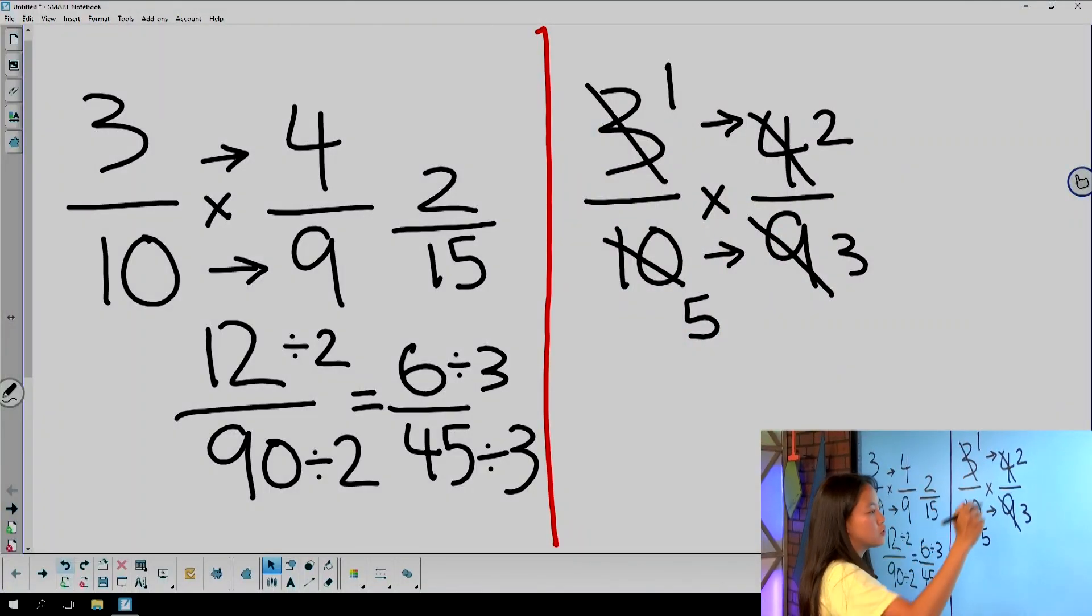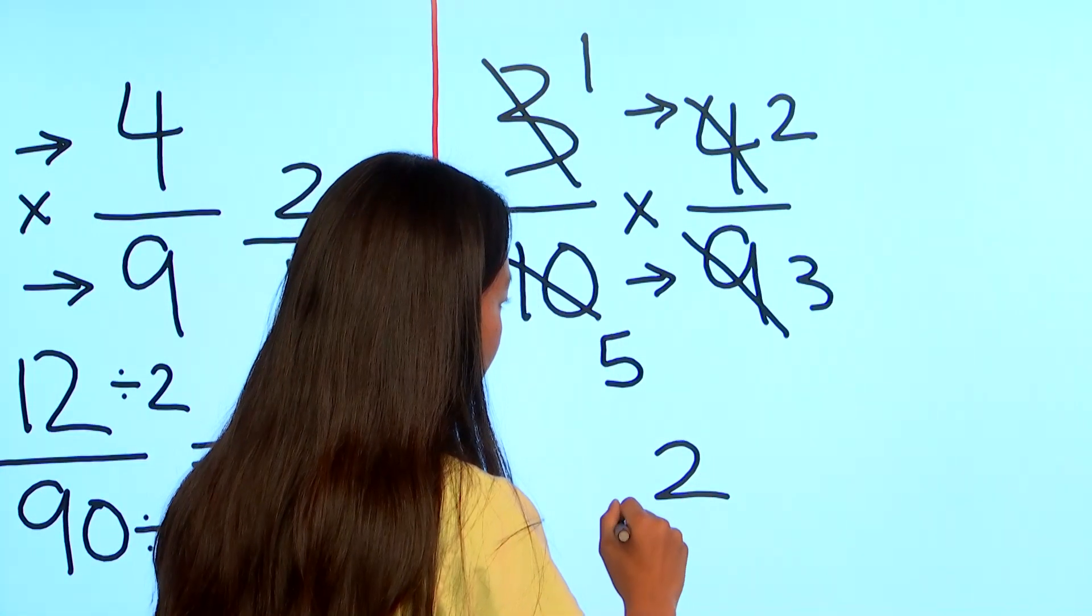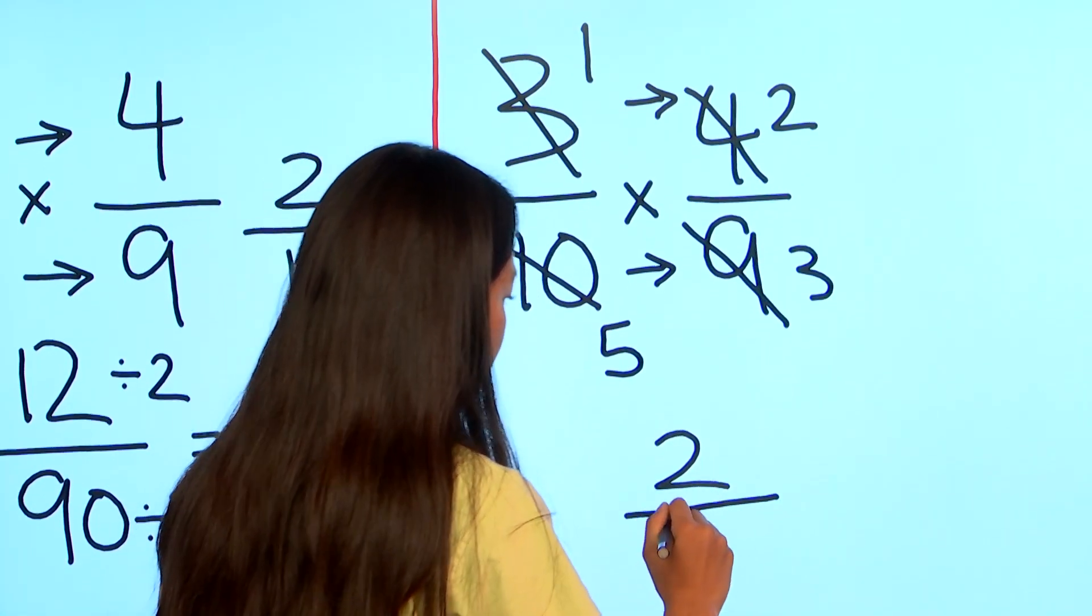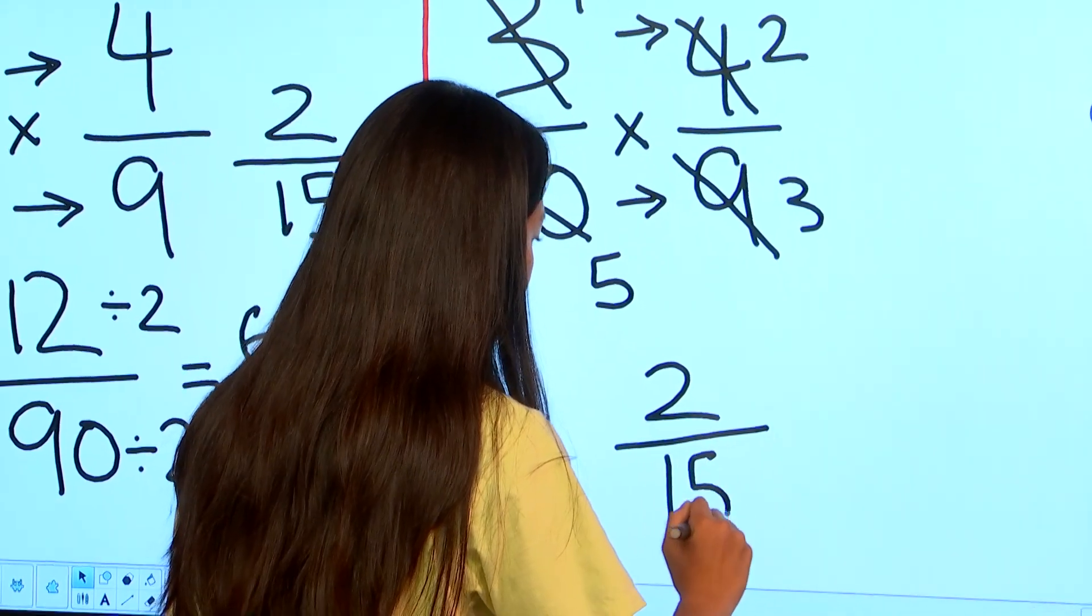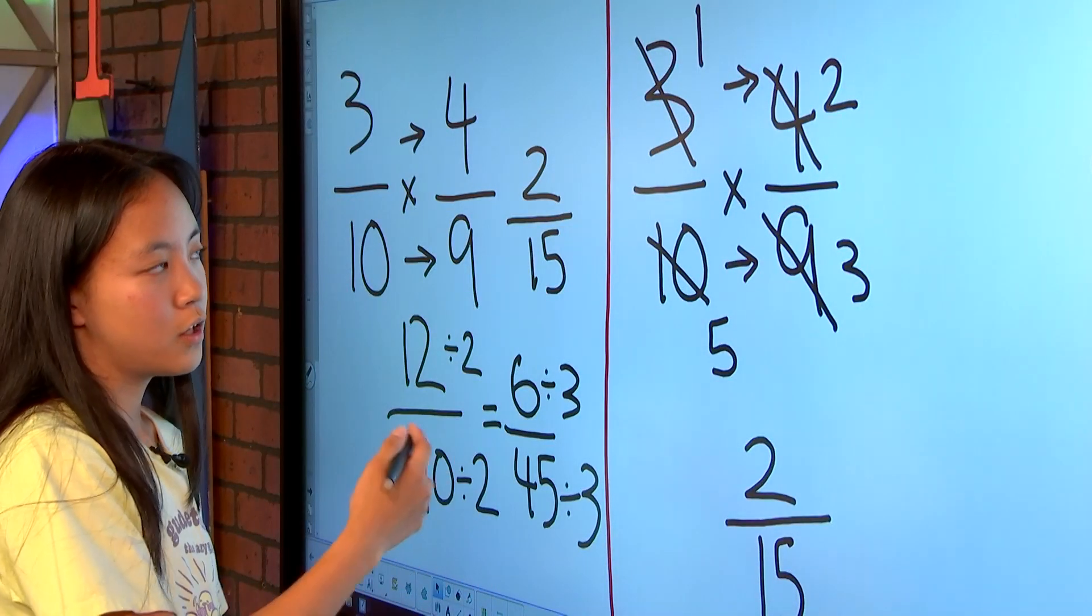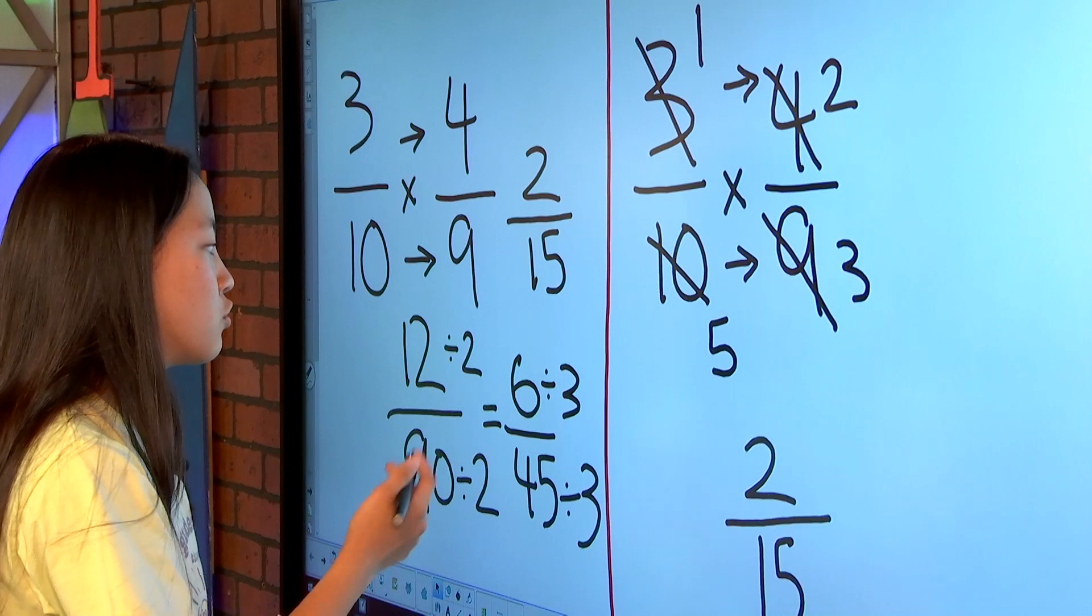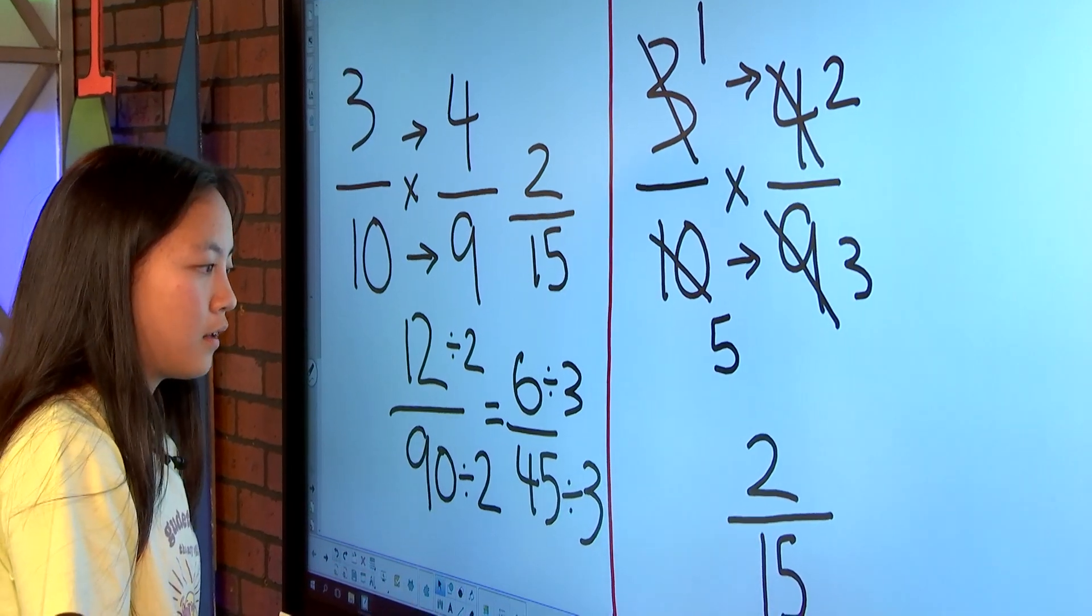So it would be 1 times 2, which would be 2, and 5 times 3, which would be 15. So you get the same answer either way. This one you just simplify it while doing the problem, and this one you would simplify it basically at the end.